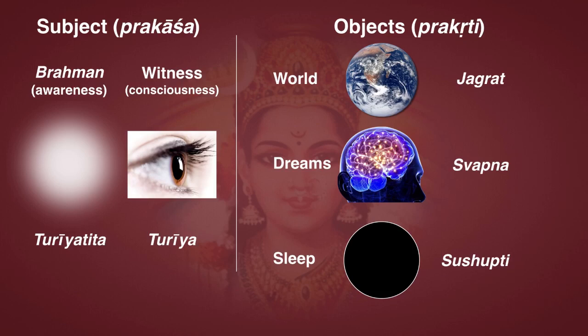The pure subject is Brahman, and this is Turiyatita consciousness. Then there's the witness, which is Turiya. And then there are the three states of consciousness: consciousness of the world — Jagrat; consciousness of dreams — Svapna; and consciousness of deep sleep — Sushupti. The secret of this method is that one makes the object of inquiry the three states of consciousness, thus differentiating between awareness and consciousness.